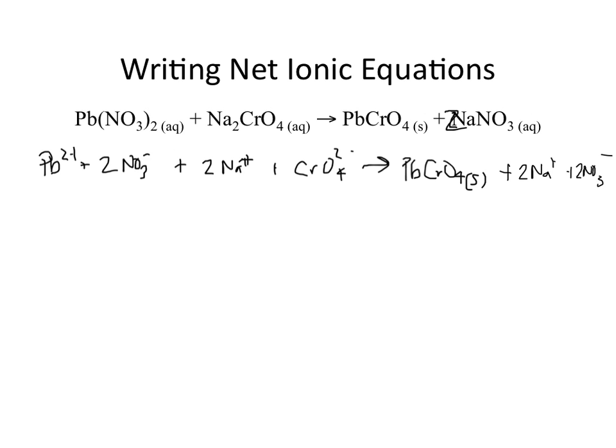After we've written out all of the ions and broken everything apart, we then go through and cancel out any ions that show up on both sides. Notice Pb plus 2 is on this side. There is no Pb plus 2 on this one. So that Pb plus 2 is left alone.